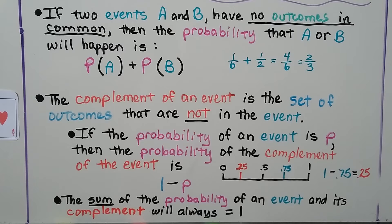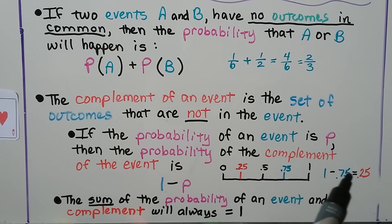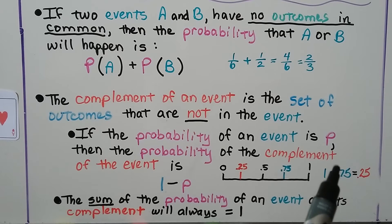The complement of an event is the set of outcomes that are not in the event. So if the probability of an event is P, then the probability of the complement of the event is 1 minus P. So if we have a 75% chance of getting something, the complement would be 1 minus 0.75, which equals 0.25. The sum of the probability of an event and its complement will always equal 1: 0.75 plus 0.25 equals 1.